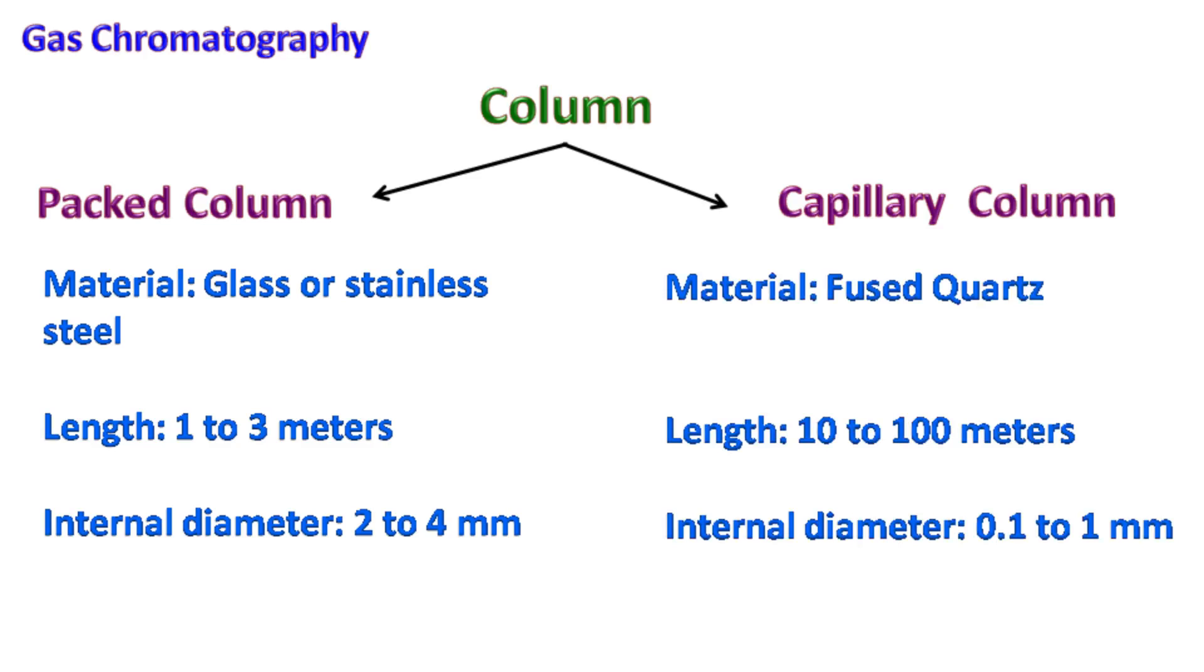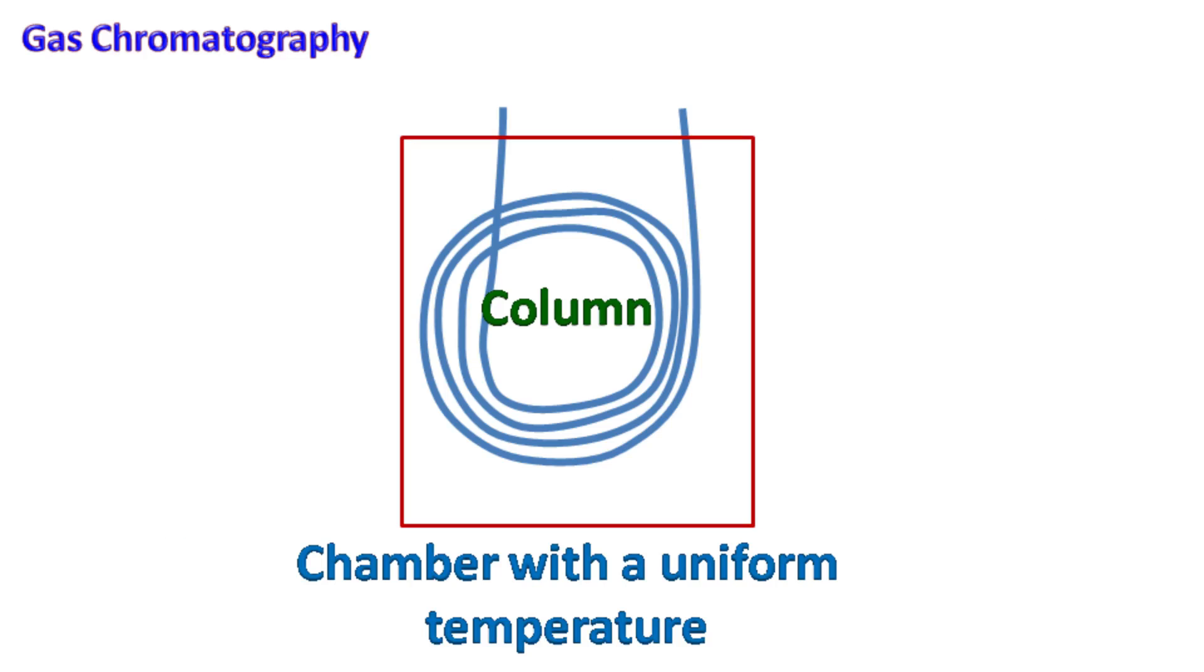These columns are very long and have length from 10 to 100 meters and have an internal diameter of 0.1 to 1 millimeter. The column is placed in a chamber so that a uniform temperature can be maintained.